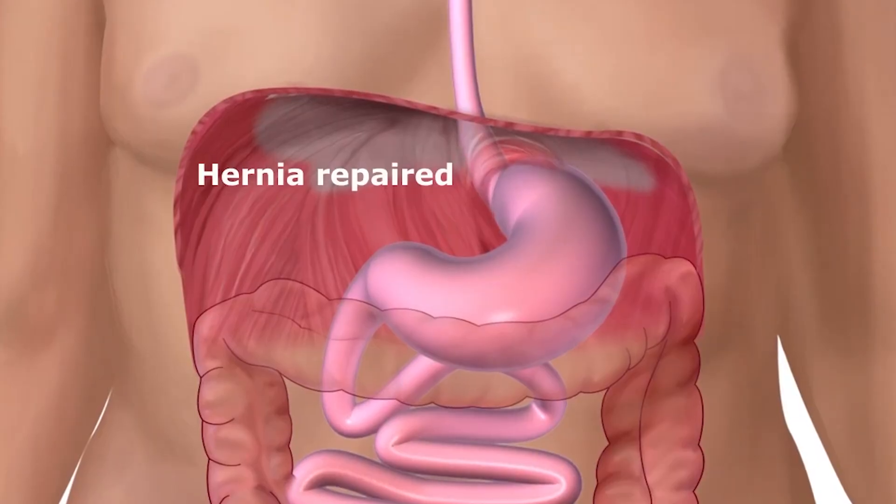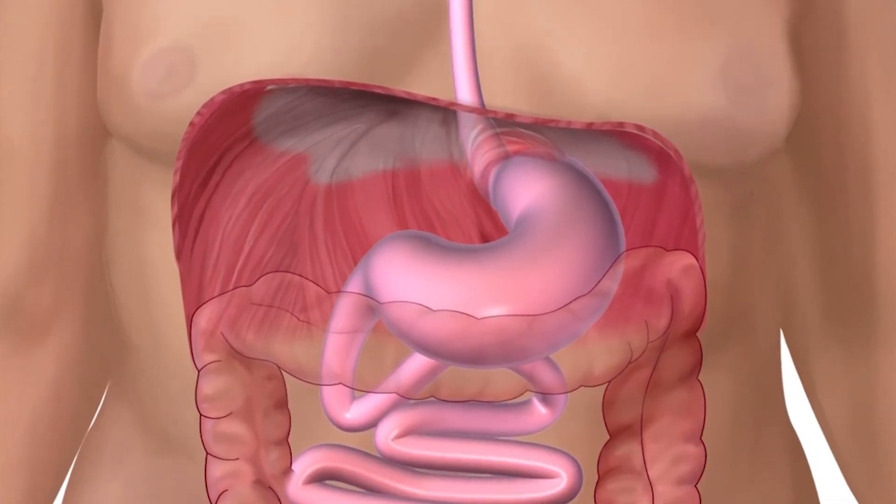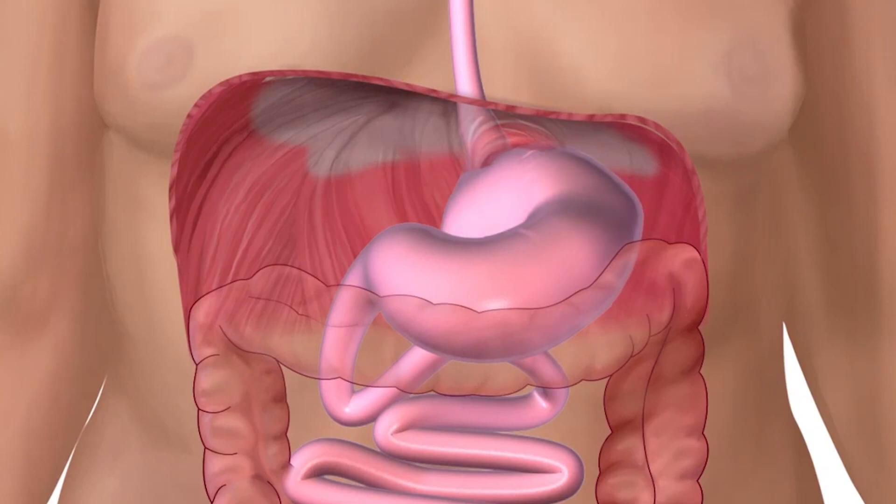The hiatal area is the part where the esophagus comes down through the diaphragm — it is a hole. After the hiatal area, the esophagus connects with the stomach. In this part of the surgery, the hiatal area is dissected to see the enlargement of the hiatus, because one of the most common anatomical reasons for gastroesophageal reflux is the enlargement of the hiatus.